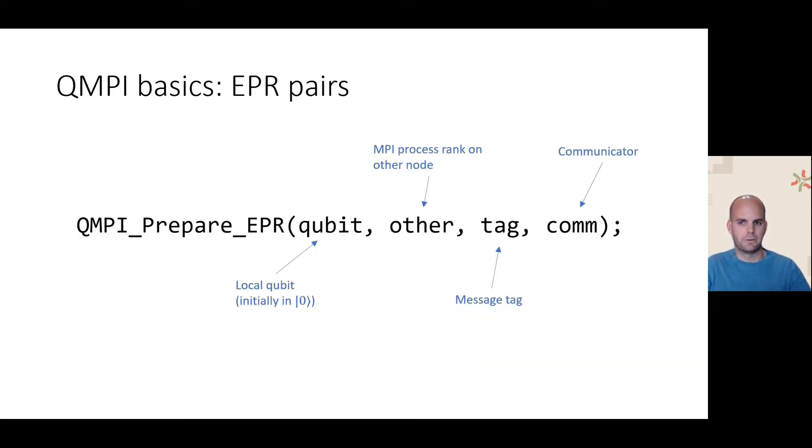The most basic primitive of QMPI is EPR pair creation, which is a symmetric QMPI function. QMPI prepare EPR takes as input the local qubit, assumed in a fresh state meaning ket zero, another MPI process rank with which to establish the EPR pair, message tag, and finally the communicator, for example MPI comm world. All higher-level communication in QMPI is built on top of this basic primitive.